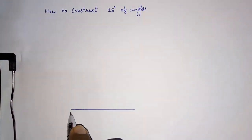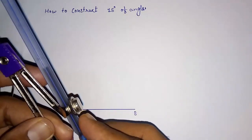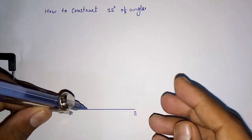This is a line segment AB. If I want to construct 15 degrees from this point, first I have to draw a semicircle like this with any measurement you can take.